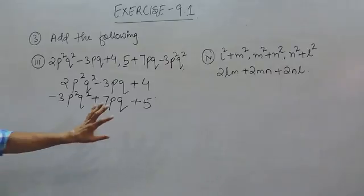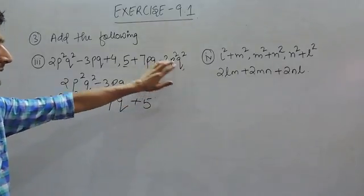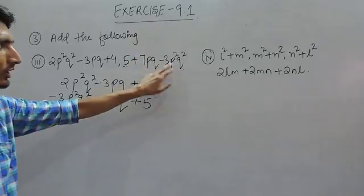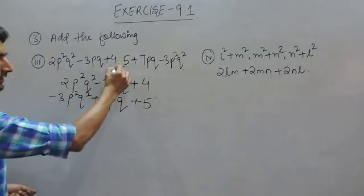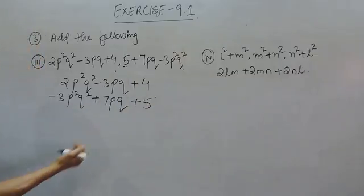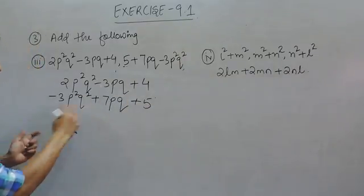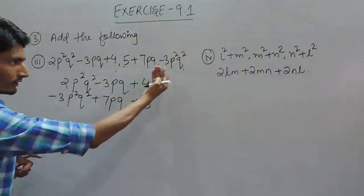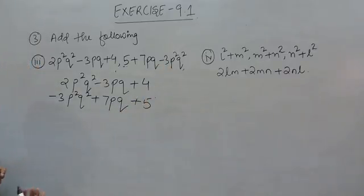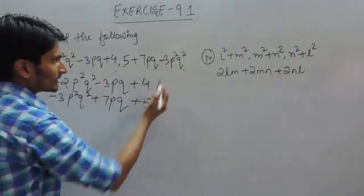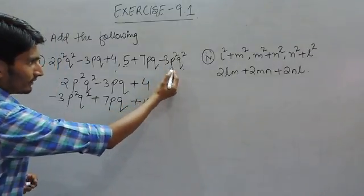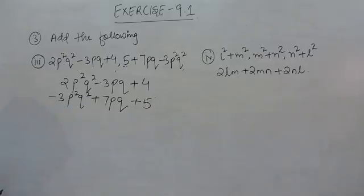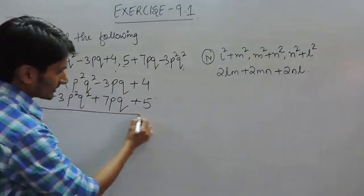No matter if you write this expression first and this expression last, it won't make any difference. You can shift terms accordingly. But one thing is very important: you can't alter the signs. If this is negative, you have to write negative 3p square q square. This makes our addition simple.